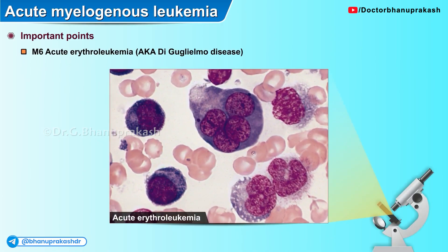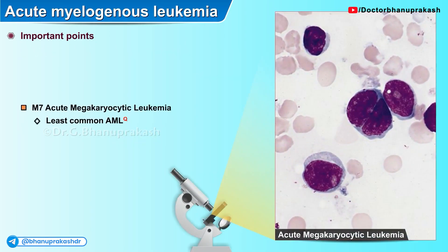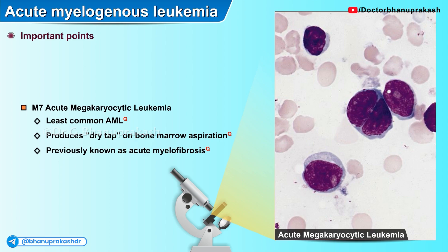The M6 or acute erythroleukemia is also called Di Guglielmo disease. The least common AML is M7, acute megakaryocytic leukemia, which produces a dry tap on bone marrow aspiration and was previously known as acute myelofibrosis. Remember that M7 is the least common AML overall but becomes the most common variant of AML among patients with pre-existing Down syndrome.